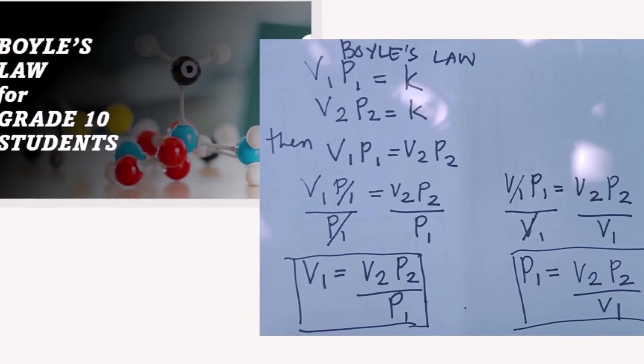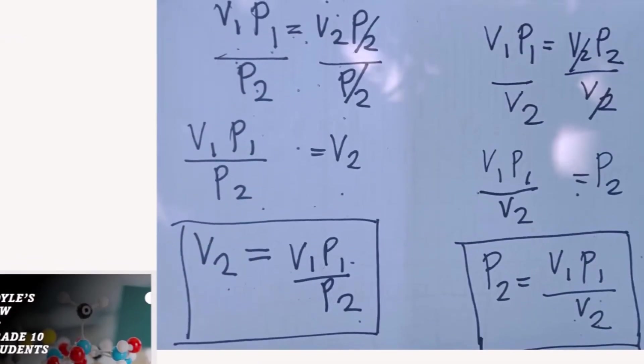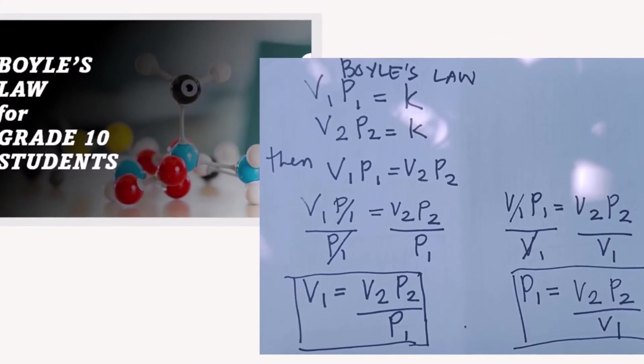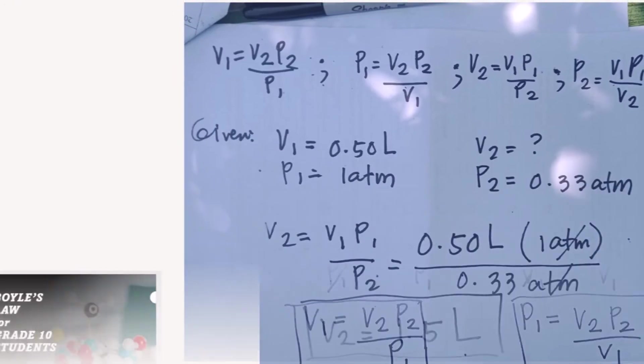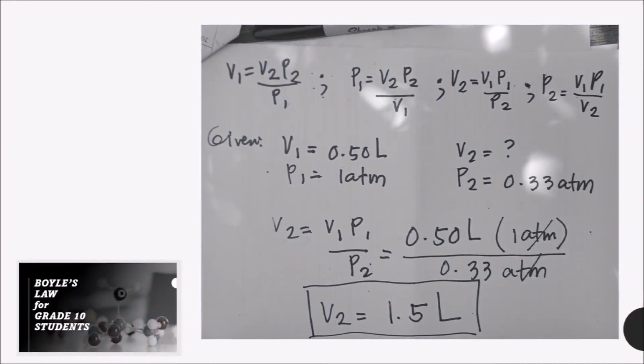Boyle's Law actually helps us understand the phenomenon behind respiration. In your grade 9 lesson, if you remember, you made a model, a lung model, to explain the respiratory system. I hope you still remember that. As you pull the balloon, which represents the diaphragm, it also tells you that your lungs expand. Explaining it with Boyle's Law, pulling the rubber balloon represents inhaling. And when you inhale, the lung cavity expands, causing the pressure inside the lungs to decrease and become lower than the outside pressure.